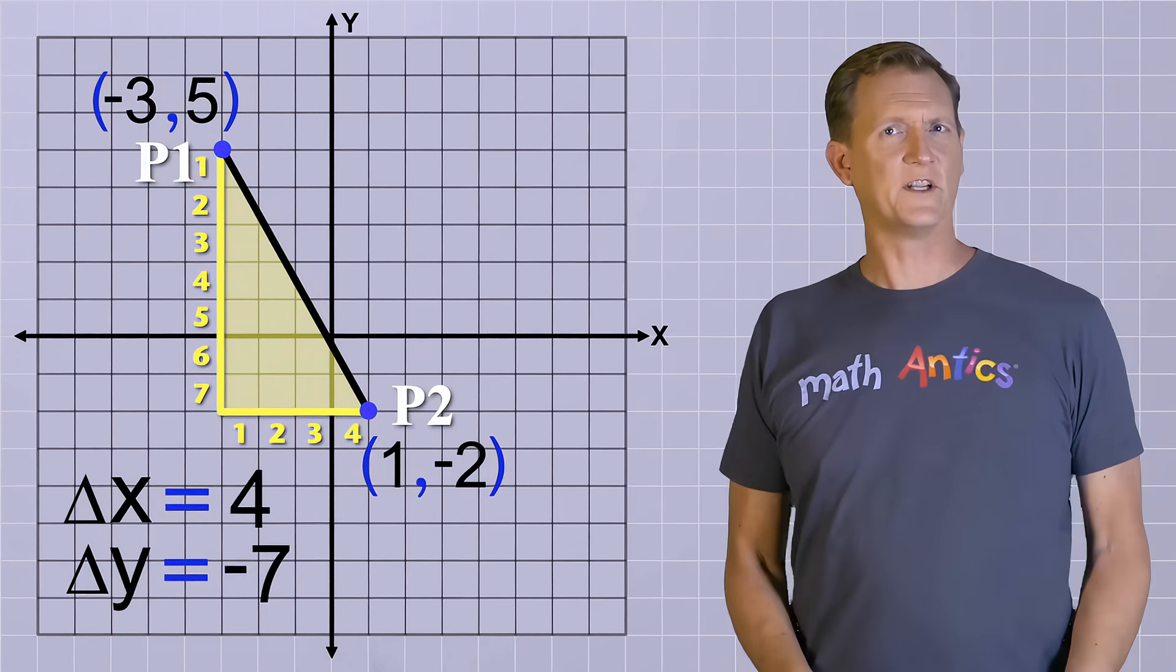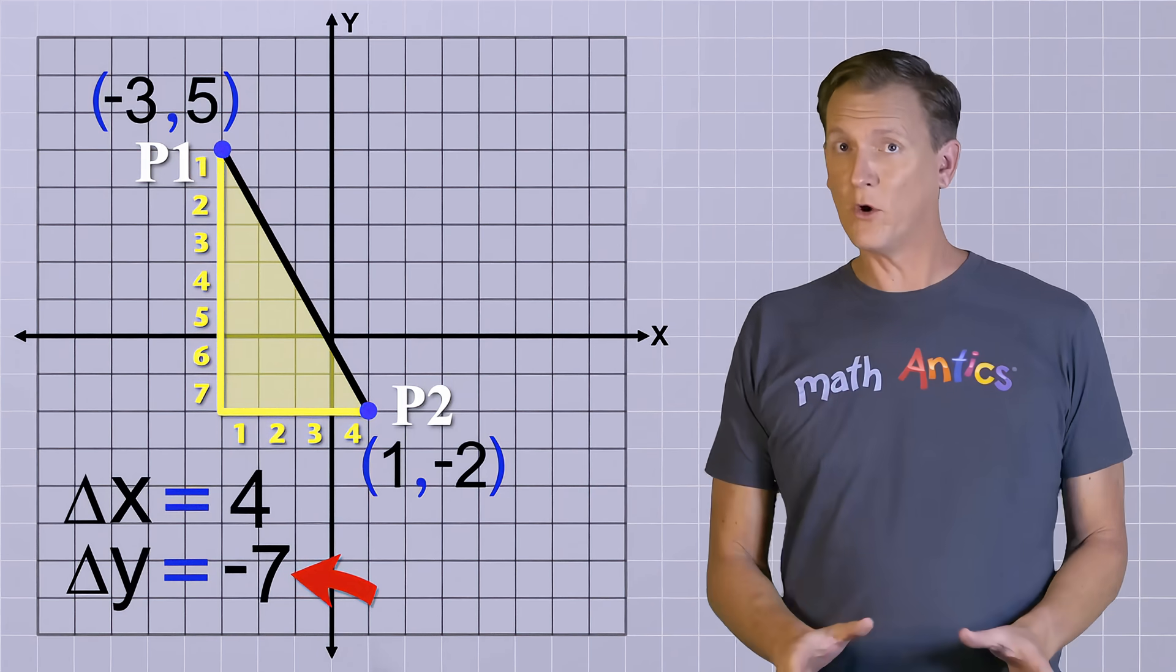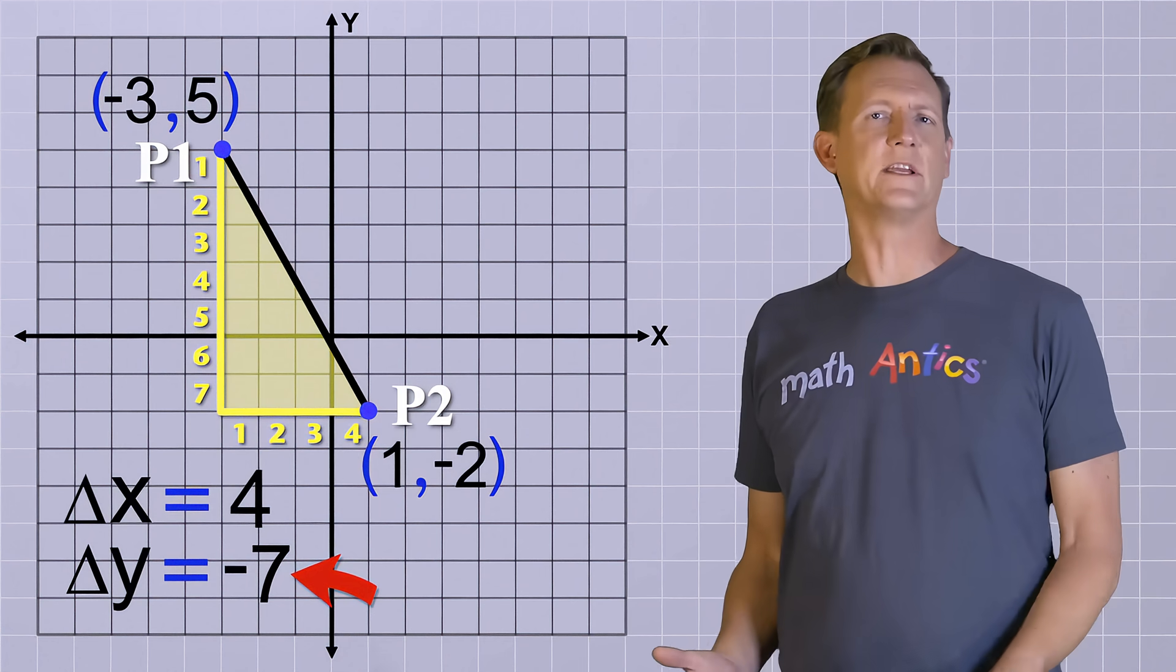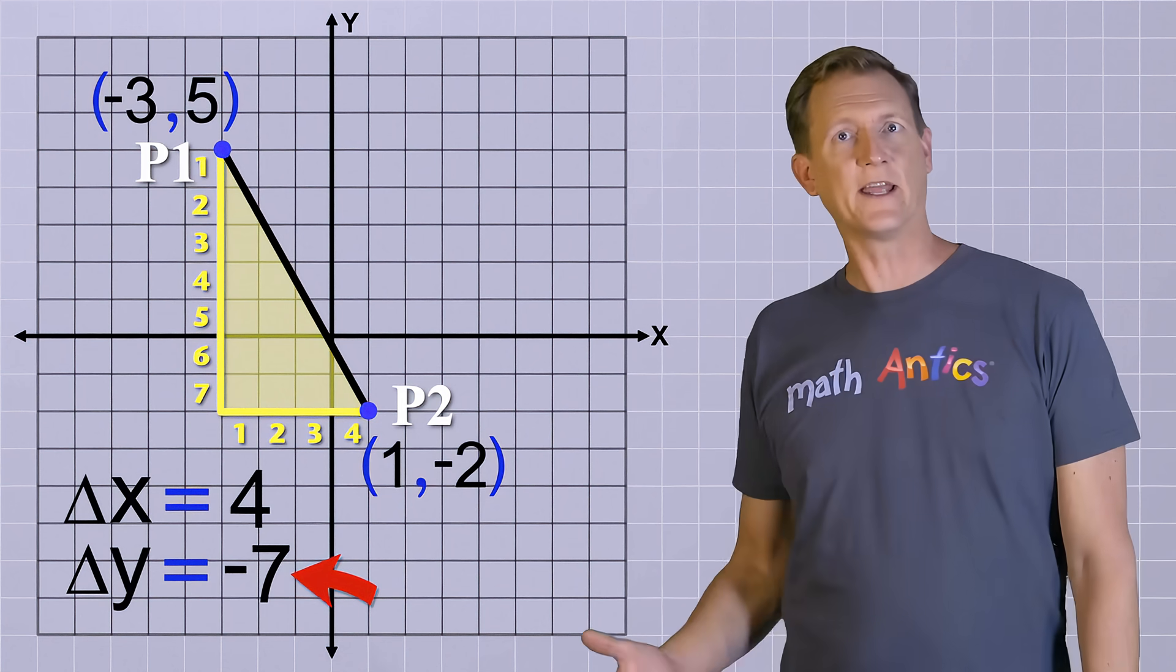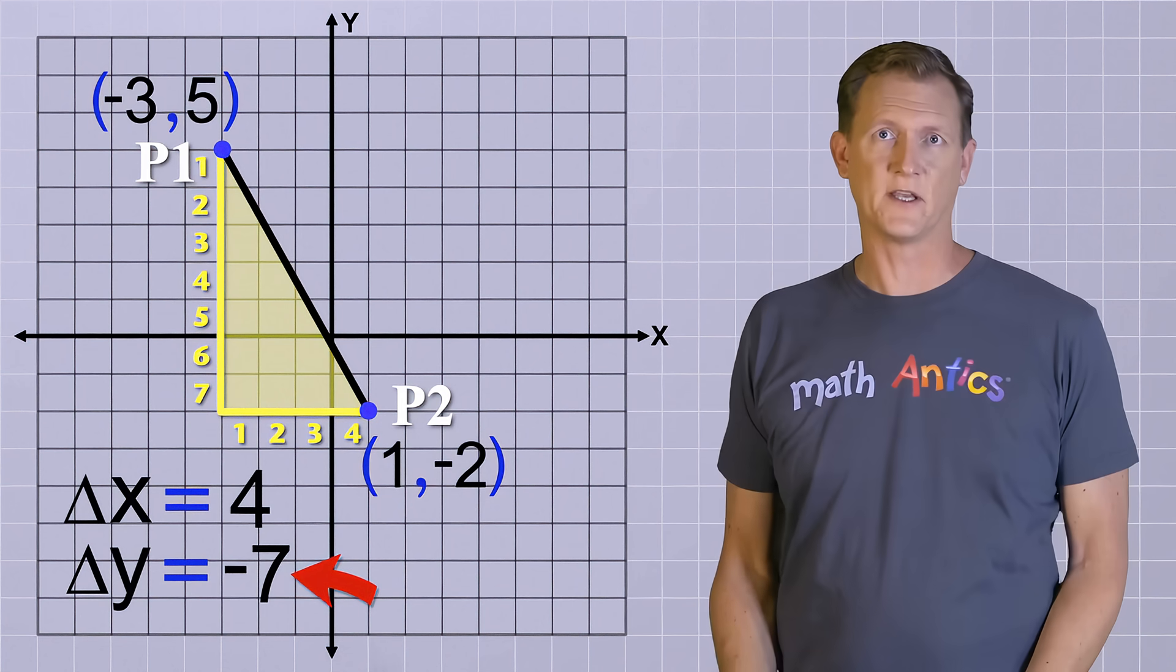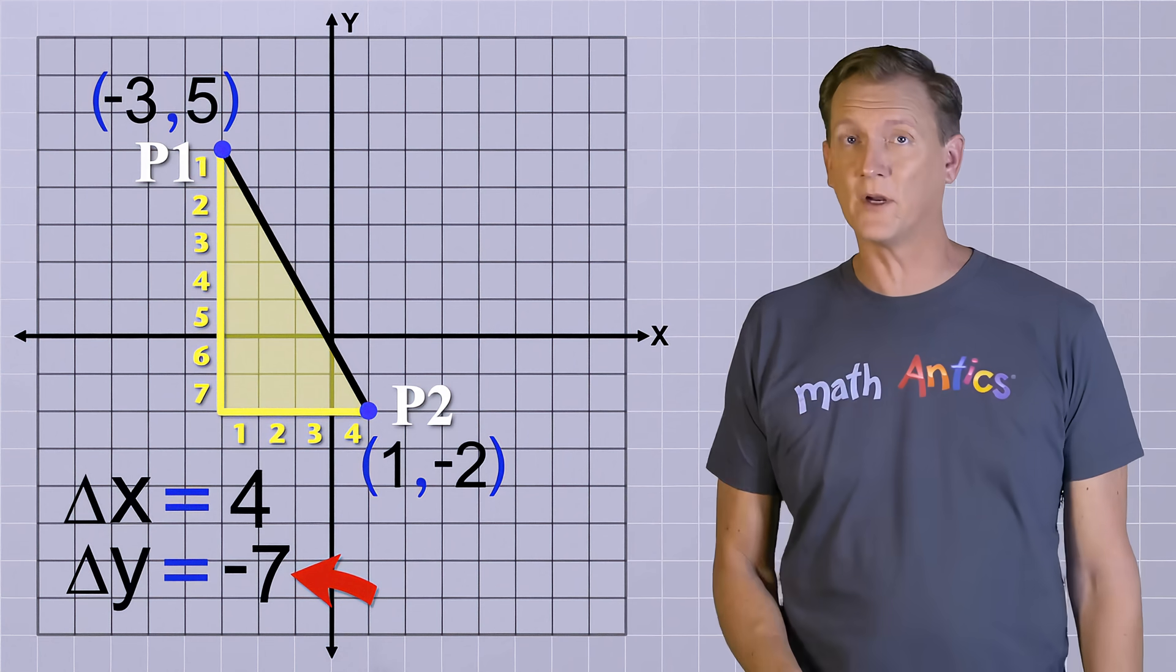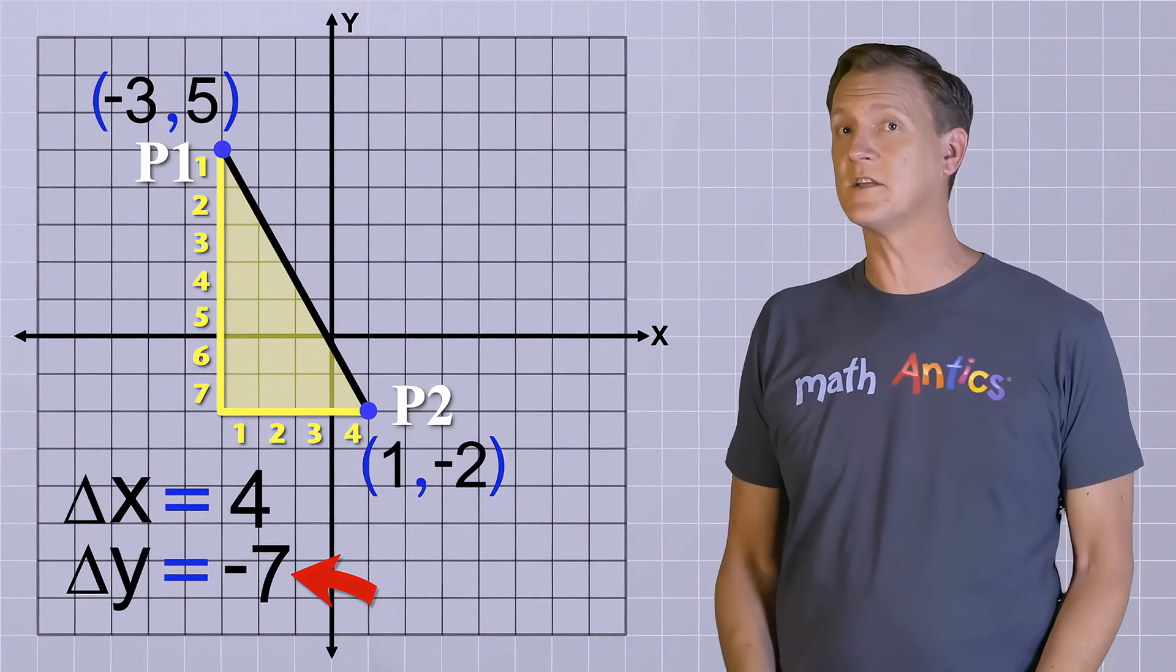Or do they? One of our deltas is negative, but a length can't be negative, can it? Well no, but remember that deltas are really a difference between coordinate values, so they can be negative. The lengths of the triangle's sides are really the absolute values of the deltas. But the signs of the deltas are important because they help us get the correct slope, since a slope can be positive or negative.